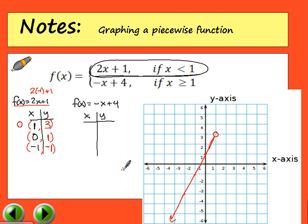We can double-check: the y-intercept should be 1 — yes. The slope should be 2, rise 2 run 1 — yes. Notice I started on the left and moved right. Some students might say it looks like a negative slope because the eye starts at the arrow, but we read left to right, so it is a positive slope. The domain is X less than 1.